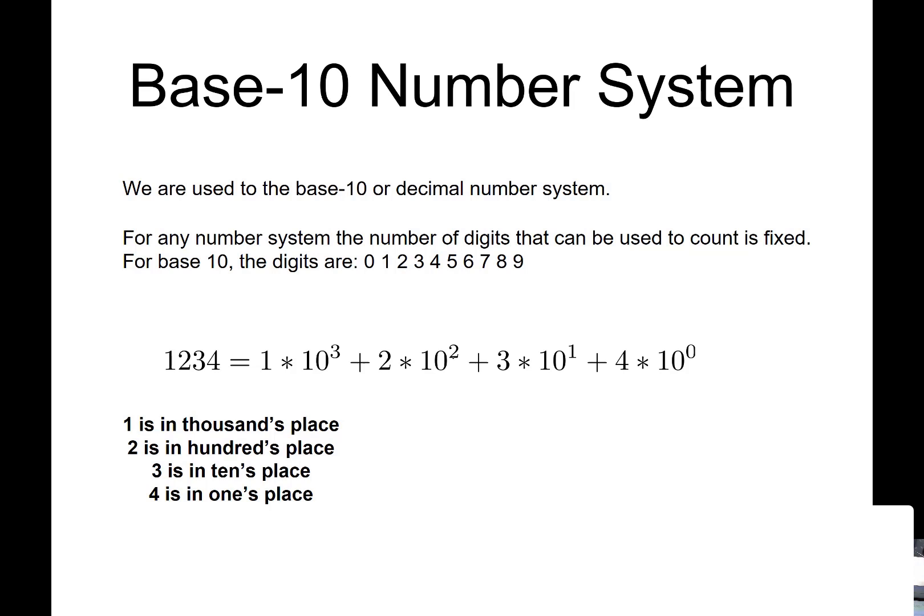So an example of that is, I have 1, 2, 3, 4 here. And this can be represented as 1 times 10 to the 3rd, because we have 1 in the 1,000th place, so this would be 1,000. And then we have 2 in the 100's place, times 10 squared, which is 100, so this would be plus 200.